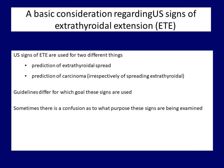First, these signs may suggest extrathyroidal spread. Second, these signs are useful to predict cancer irrespectively of whether spreading is extrathyroidal or not. In the latter sense, these signs are similar to microcalcification, irregular border or shape, and deep hyperechogenicity. Guidelines differ as to which goal these signs are used for. In this presentation, we have so far examined whether ultrasound is suitable for predicting extrathyroidal growth.